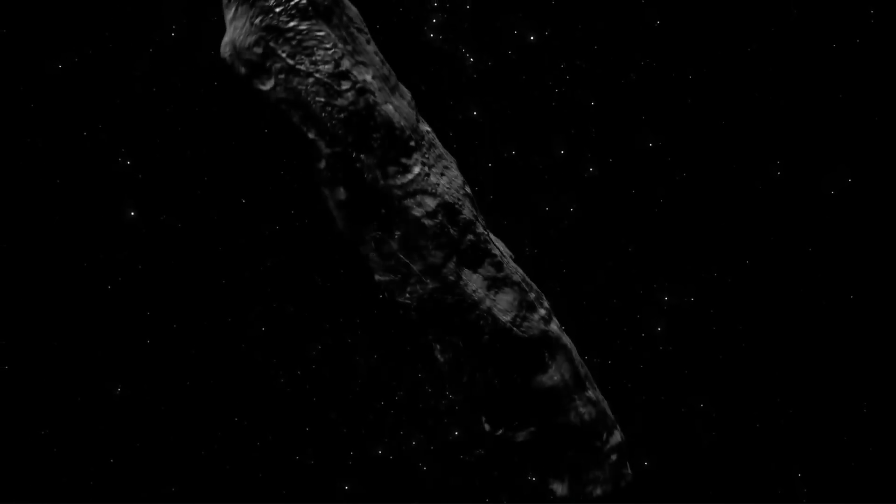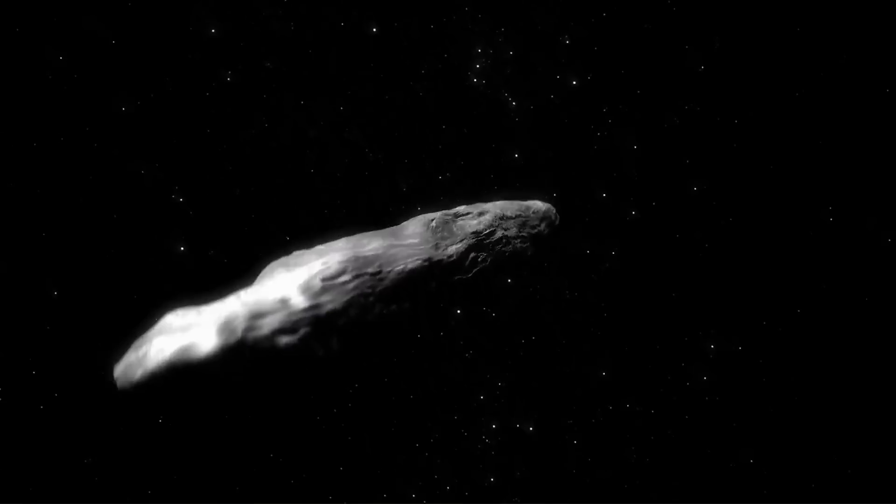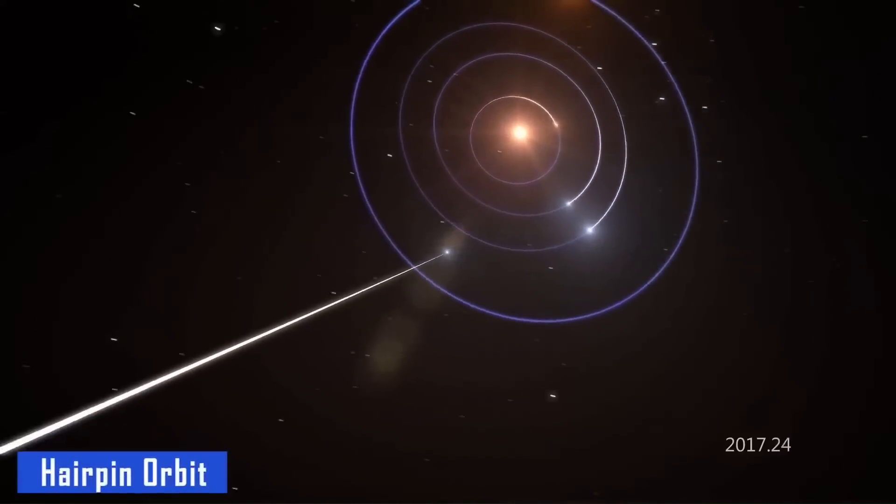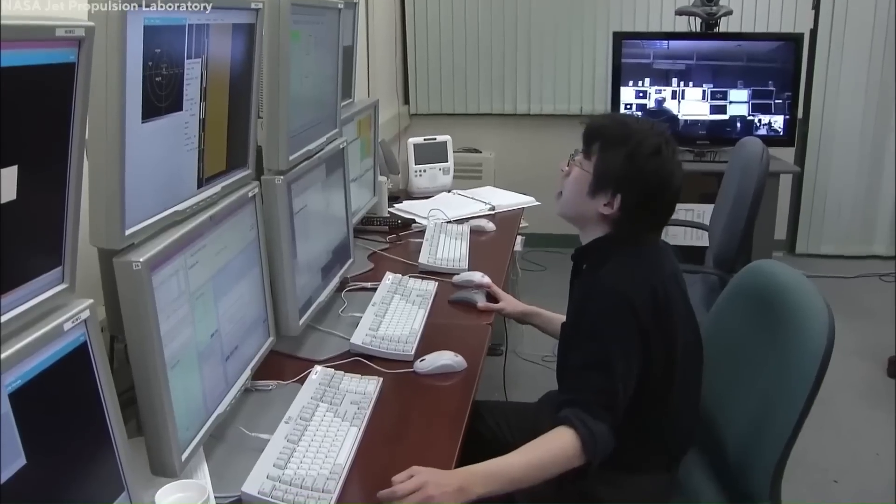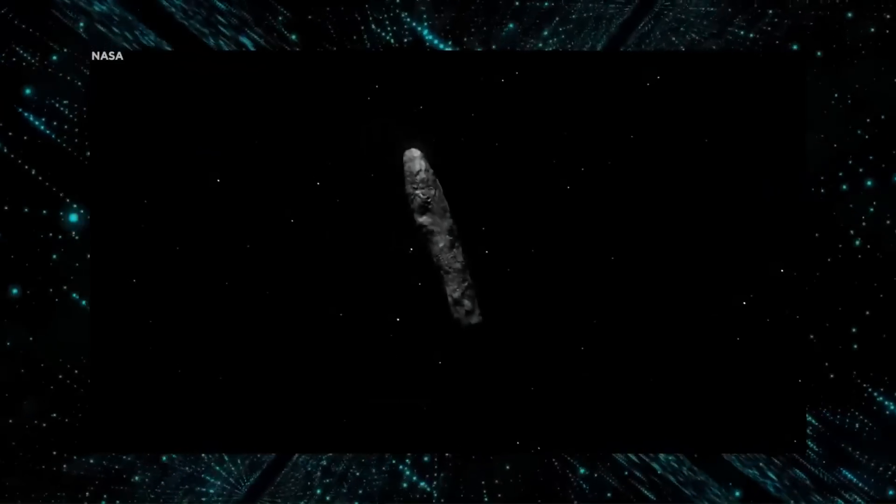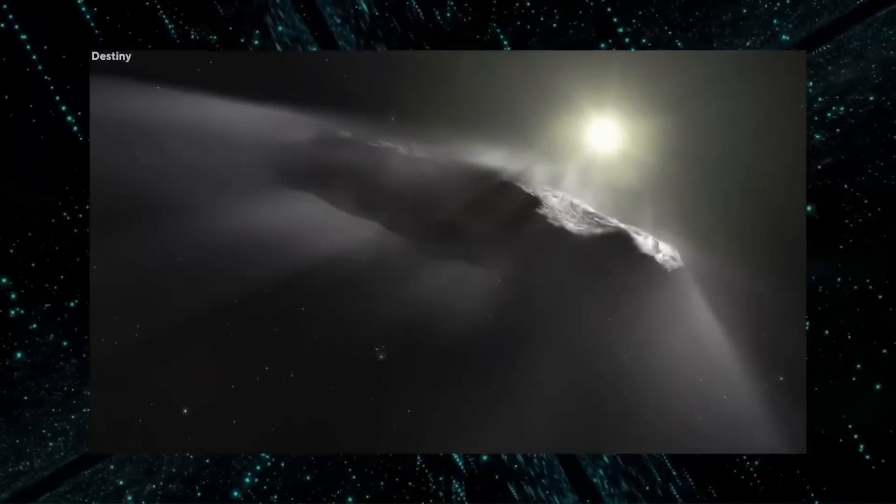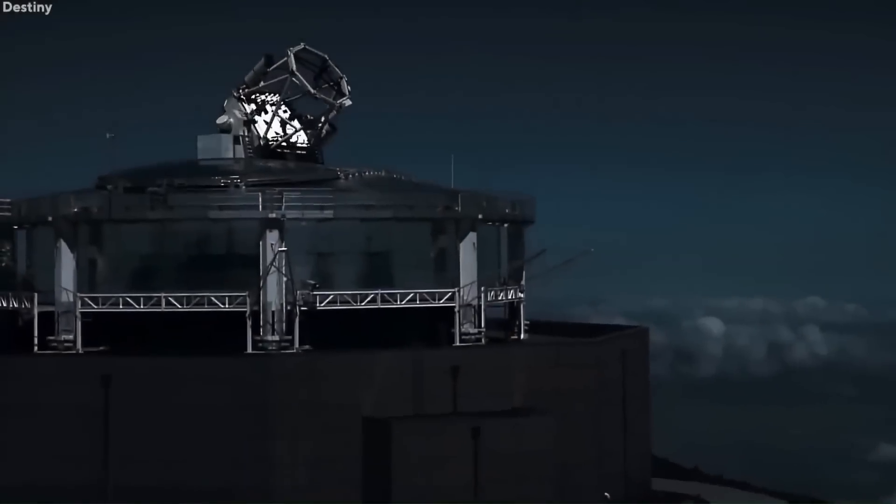But then things got even scarier. Oumuamua was showing no signs of slowing down. Instead, it was actually speeding up as it got closer to Earth, only to then do a sharp orbit and head back in the general direction it came from. When the researchers did a deep dive into the data they had collected, they found that Oumuamua hadn't just steadily sped up as it made its way to Earth, but sped up several times throughout the journey, both to and from Earth. But it's a rock. It doesn't have an engine or bursters, right?